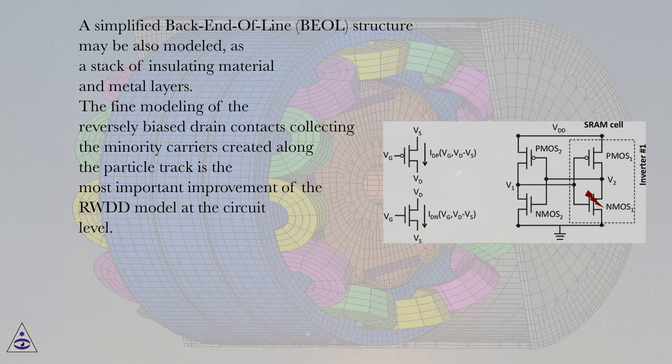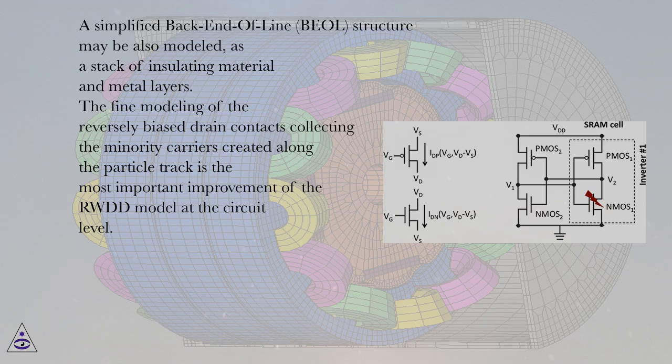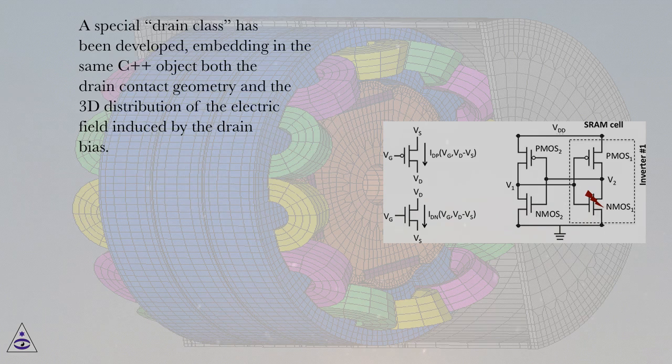The fine modeling of the reversely biased drain contacts collecting the minority carriers created along the particle track is the most important improvement of the RWDD model at the circuit level.